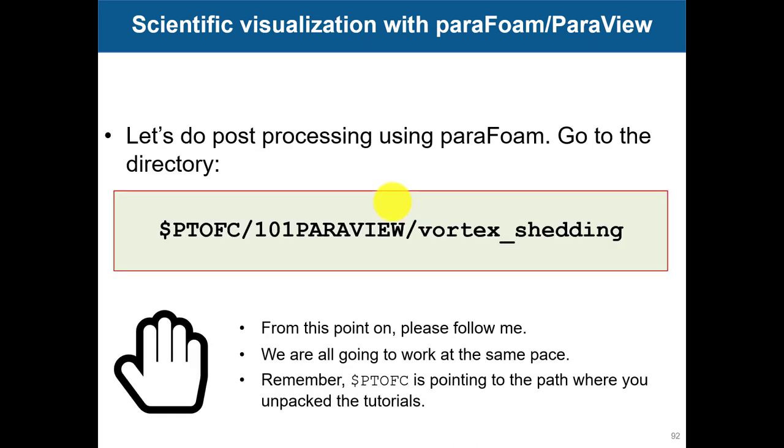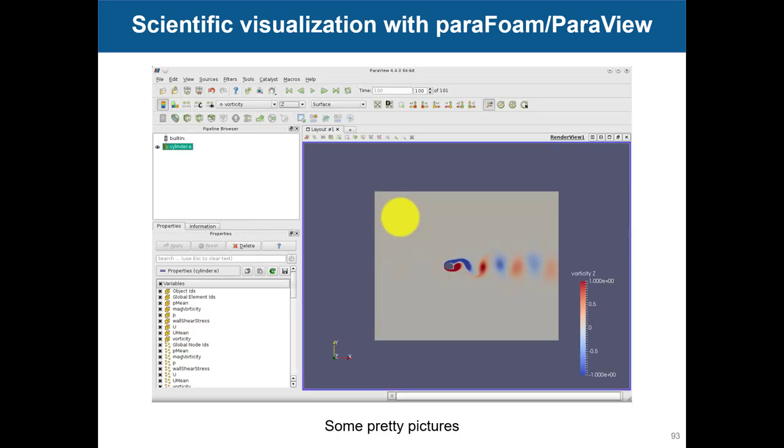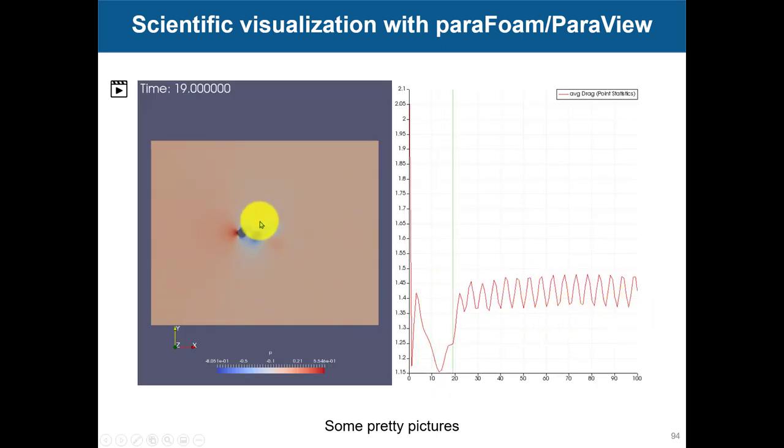We're going to do this and then we're going to move to a second case, vortex shedding. This one is a steady case. We have just one sheet and one single snapshot of the solution, the final one. In this case, we're going to have a solution in time. I converted the OpenFOAM solution to a format called Exodus just to save the data. This Exodus format takes less space, but it doesn't matter.